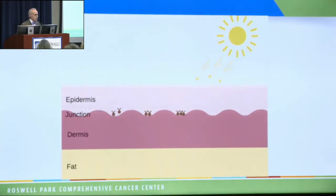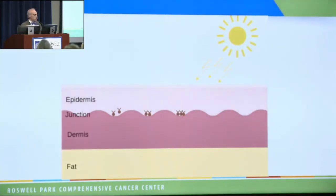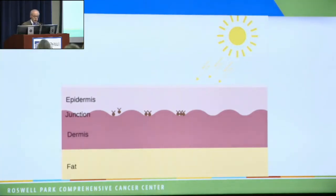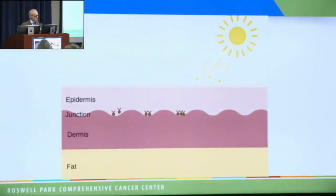Depending on where in the skin it is determines the number of melanocytes you might have. Actually, depending on your skin color, the number of melanocytes is the same — they just produce different amounts of pigment. If you have red hair, you have a different pigment called eumelanin, which is slightly different and gives you a red hue.